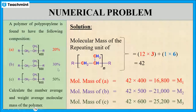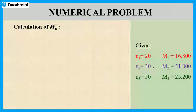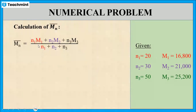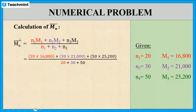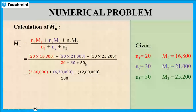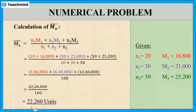Here, N1 is 20, N2 is 30, and N3 is 50. Now with this data, we can calculate this problem similar to the previous problem. The formula for Mn bar is: Mn bar equals (N1·M1 plus N2·M2 plus N3·M3) divided by (N1 plus N2 plus N3). Substituting: (20×16,800) plus (30×21,000) plus (50×25,200), whole divided by (20 plus 30 plus 50). On simplification, the final answer is 22,260.